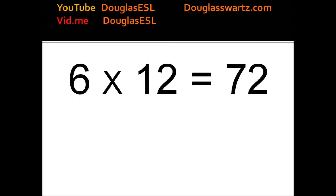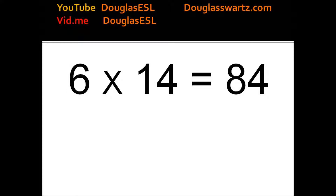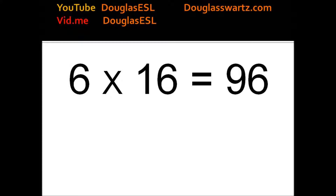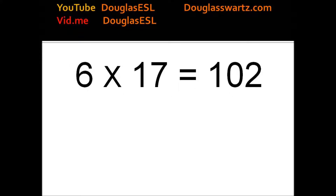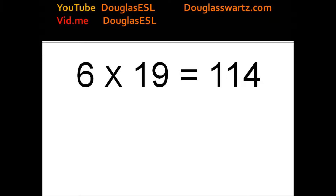6 times 12 equals 72. 6 times 13 equals 78. 6 times 14 equals 84. 6 times 15 equals 90. 6 times 16 equals 96. 6 times 17 equals 102. 6 times 18 equals 108. 6 times 19 equals 114.